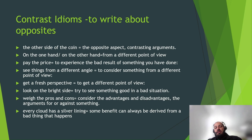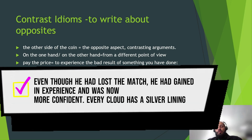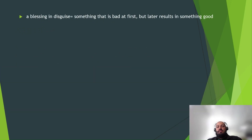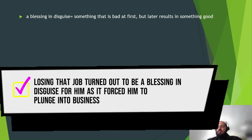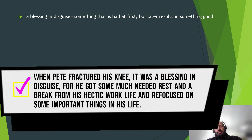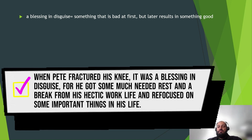'Every cloud has a silver lining' means some benefits can always be derived from bad things that happen. The silver lining comes from when clouds part and the sun appears. For example: 'Even though we had lost the match, we had gained in experience and were now more confident — every cloud has a silver lining.' Then 'a blessing in disguise' — something that is bad at first but later results in something good. For example: 'Losing the job turned out to be a blessing in disguise as it forced him to plunge into business.'